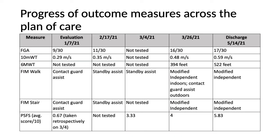Looking at the patient's outcomes across the plan of care: his FGA improved from 9 at evaluation to 17 by discharge. His gait speed more than doubled from 0.29 to 0.59 meters per second. His six-minute walk test improved from 394 feet to 522 feet. He progressed to modified independent for gait and stairs with the use of a straight cane, and his PSFS upon discharge improved to 5.83 from an initial score of 0.67.